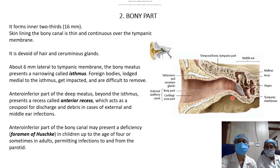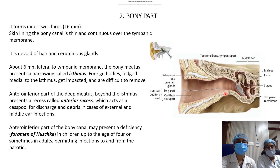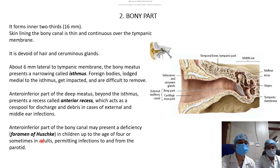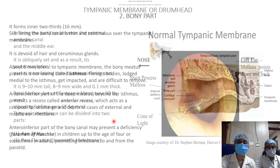The bony part has three important features. First is the isthmus — the narrowest part of the external auditory canal, located 6 mm lateral to the tympanic membrane; foreign bodies lodged medial to the isthmus become impacted and are difficult to remove. Second is the anterior recess, located in the anteroinferior part of the deep meatus beyond the isthmus, which acts as a cesspool for discharge and debris in external and middle ear infections. Third is the foramen of Huschke, a deficiency in the anteroinferior bony canal present in children up to age four, which permits infections to pass to and from the parotid gland.